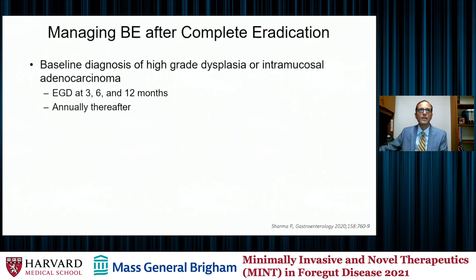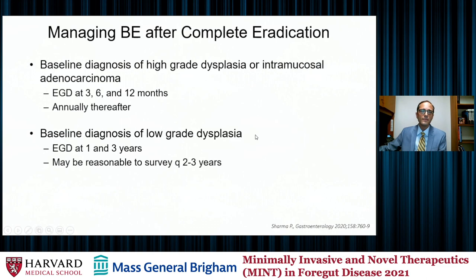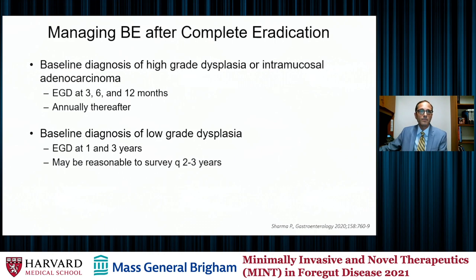How do we manage patients with Barrett's after complete eradication? The baseline diagnosis is really important here. If the baseline diagnosis included high-grade dysplasia or intramucosal cancer, those patients should have an endoscopy at 3, 6, and 12 months, and then annually thereafter — spacing it out over time if there is no evidence of Barrett's. If the baseline diagnosis was low-grade dysplasia and you've achieved complete endoscopic eradication, the most recent expert opinion from 2020 suggests performing an endoscopy at 1 year and 3 years, with the caveat that the natural history of low-grade dysplasia is still all over the map. It may be reasonable to survey patients more closely than at 1 year and 3 years per the most recent guidelines.